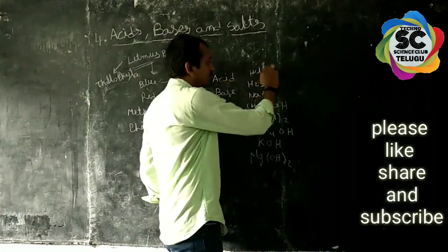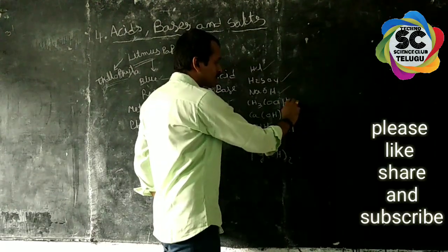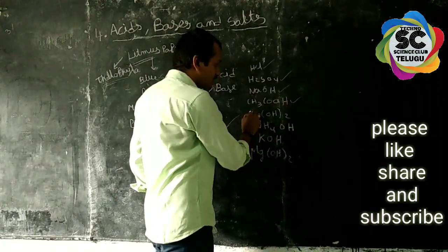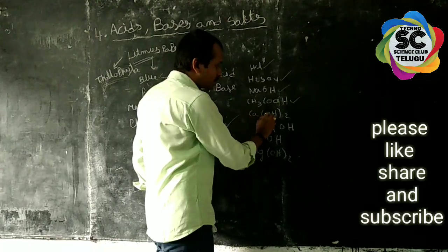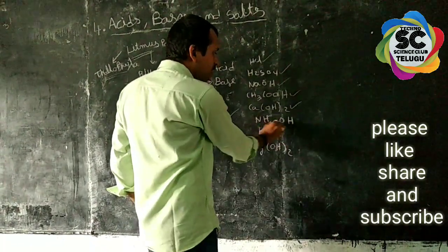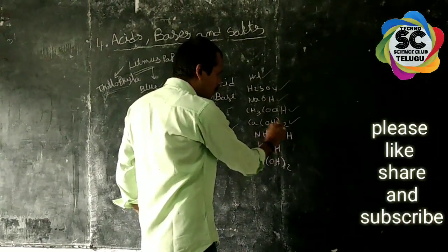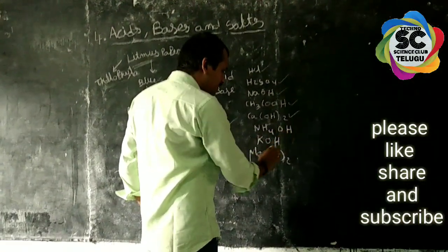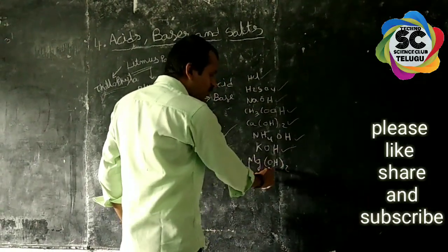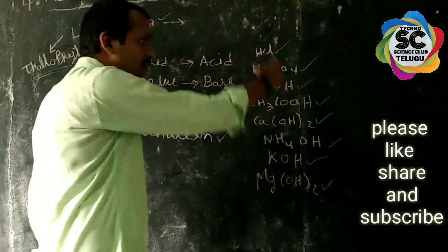First, the chemical solutions we will use: HCl, H2SO4, NaOH, Acetic Acid (CH3COOH), Calcium Hydroxide (Ca(OH)2), Ammonium Hydroxide (NH4OH), Potassium Hydroxide (KOH), and Magnesium Hydroxide (Mg(OH)2).